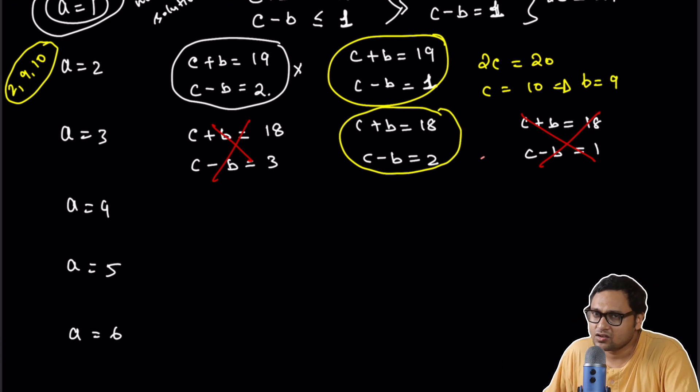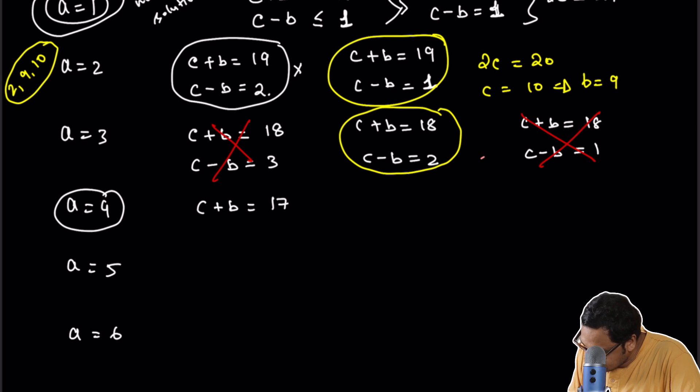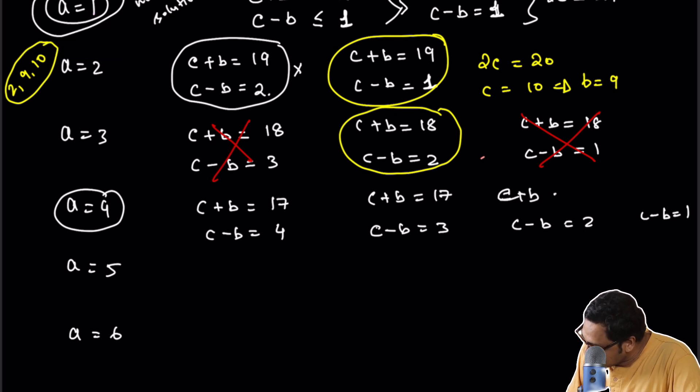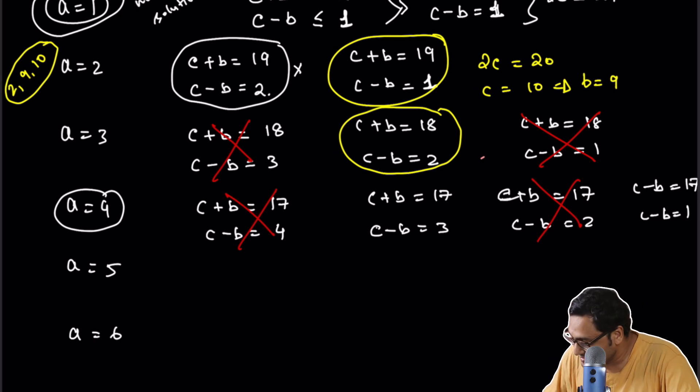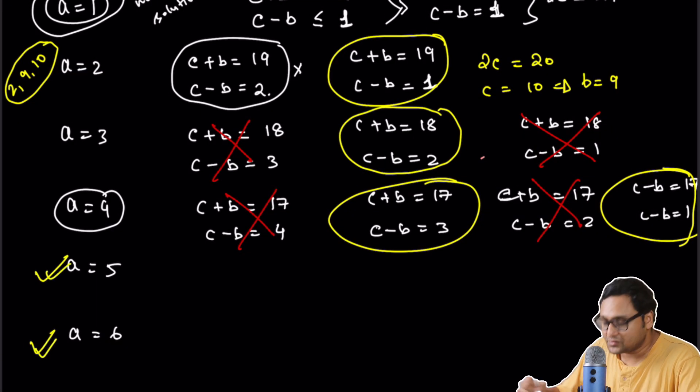What about A equal to 4? So C plus B is equal to 17, C minus B is equal to 4, 3, 2, or 1. There are four cases with C plus B equal to 17. Again you can play the same game and you can immediately check that this one doesn't work, this one doesn't work because C is becoming a decimal or a non-integer number. So again we have two solutions.